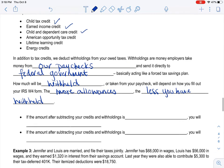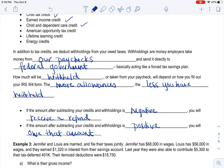But some people need the money every month more so they might claim more allowances. If the amount after subtracting your credits and withholdings is negative, okay, so you have your taxable income, you're going to take away the credits and withholdings and you get a negative value, you will receive a refund.